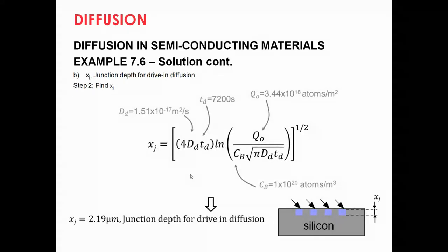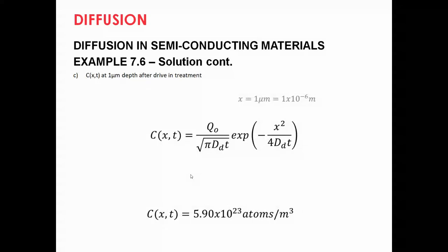After we find junction depth in part c, we use this equation. We change the value of x, the unit, into meter. We have the value of q0 and the rest. And we plug them into this relation and we end up with this number.